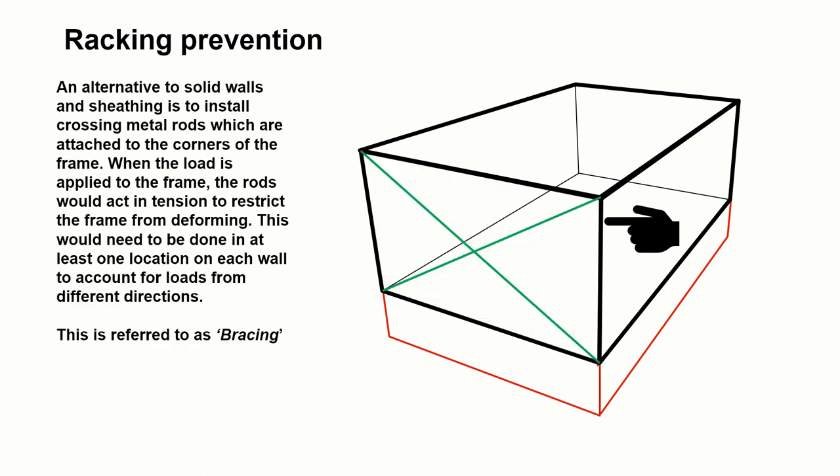A third alternative is to provide metal rods which connect from one corner to the next in a diagonal pattern, forming a cross within an open frame. And these act in tension to prevent the corners from moving away from each other. If you look back at the earlier slides or the information in lecture six, you'll see that when racking occurs, the deformation of the frame from a square to a parallelogram results in two of the corners moving further apart.